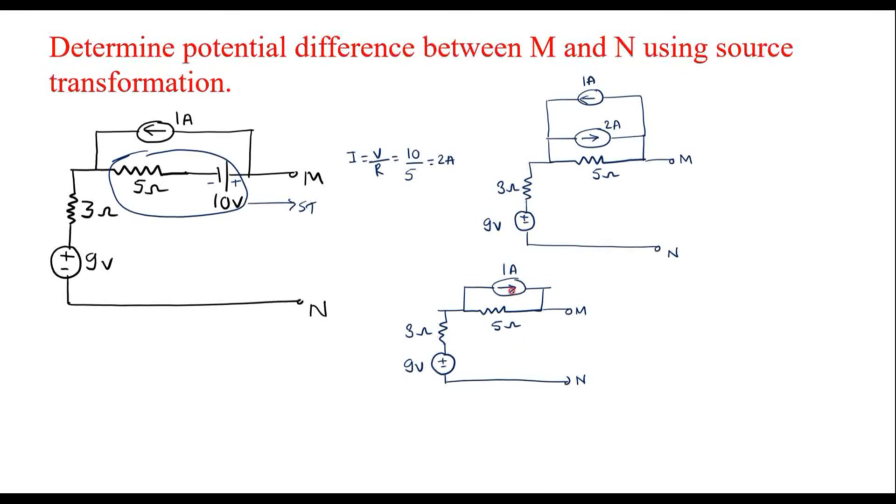Now further, let us convert this into a voltage source. I will convert this current source which is in parallel with a resistor into a voltage source. Then this resistor will appear in series with the voltage source.